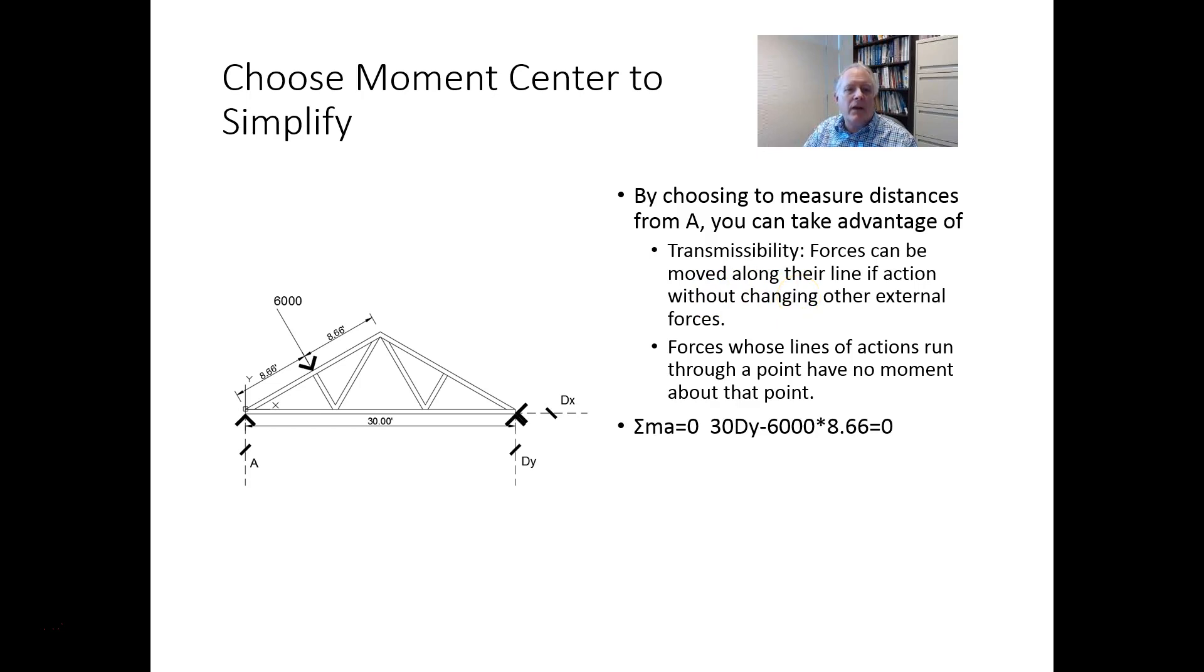So in this case, we've got sum of the moments about point A equals zero. So the perpendicular distance between this force, which is a vertical force, and this point is the horizontal distance. So 30 Dy, and I'm putting that in positive because it's going to cause a counterclockwise rotation about point A. Whereas 6,000, and here I'm just using the sloped measure because I've already got a direct distance here. So this is going to cause a clockwise motion around point A.